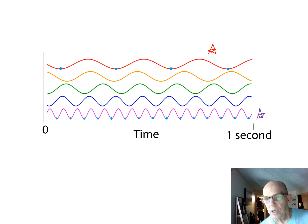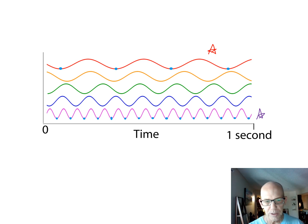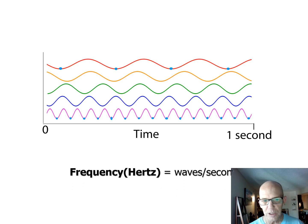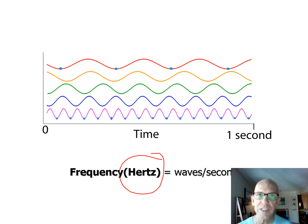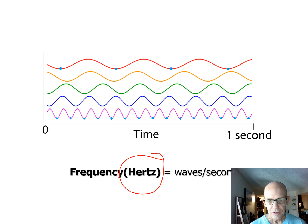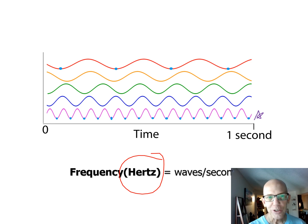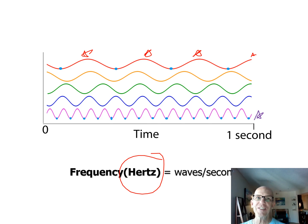If I look at how many waves pass through in one second, that's frequency, measured in Hertz — like your TV or computer. In one second, a huge number of violet waves pass through, but only maybe three or four red ones. Frequency and wavelength are functions of one another.